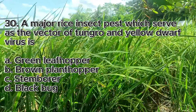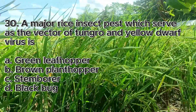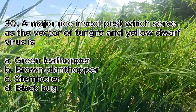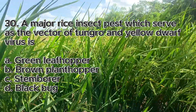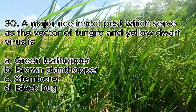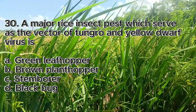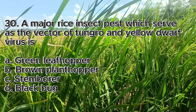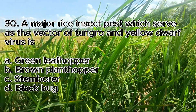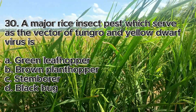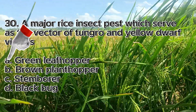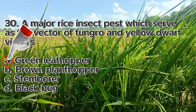Number 30. A major rice insect pest which serves as the vector of tungro and yellow dwarf viruses. A. Green leafhopper, B. Brown planthopper, C. Stem borer, D. Black bug. The answer is letter A, green leafhopper.